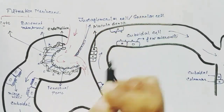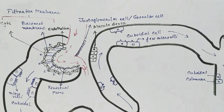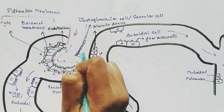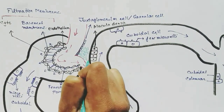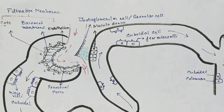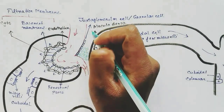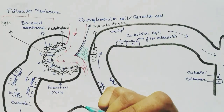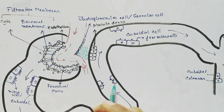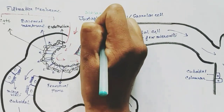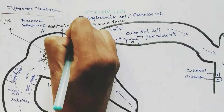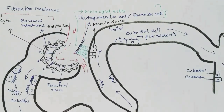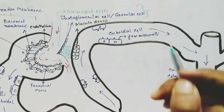The macula densa cells are stained dark in the staining process. There are also special cells present in between called mesangial cells, present at the junction.